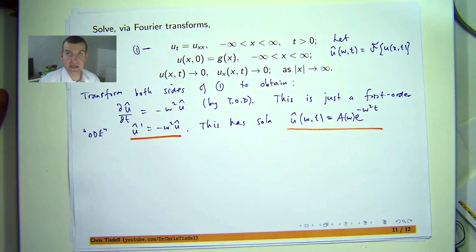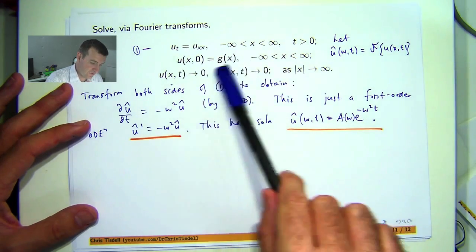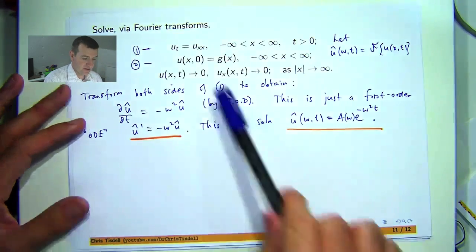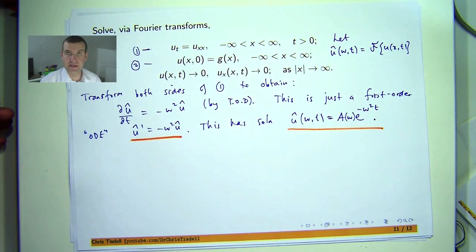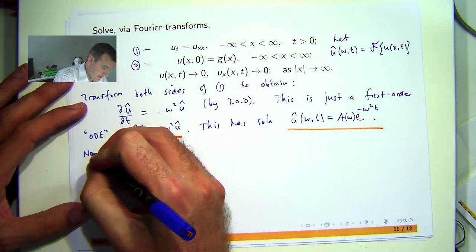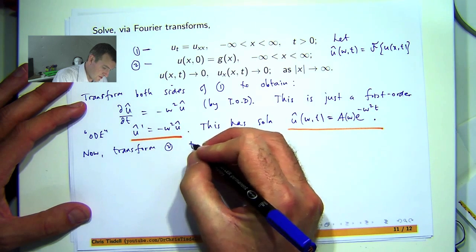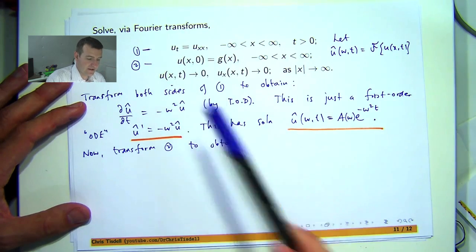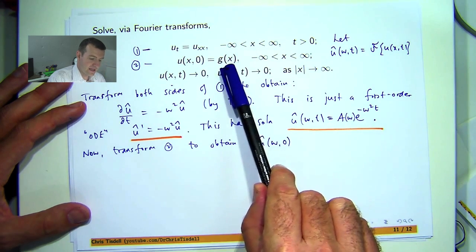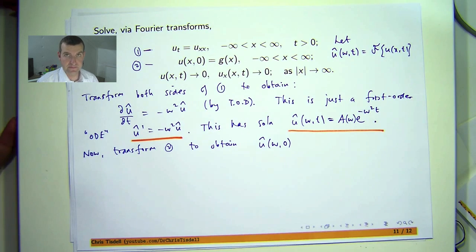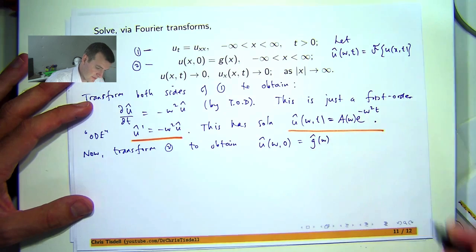We're going to use the initial temperature. So if we transform equation 2, both sides of 2, we'll actually get an initial condition that is compatible with this kind of transformed general solution. So let's transform 2. So if I transform the left-hand side, this is just going to be u-hat of w, zero. The transform of the right-hand side, well, we don't know what g is, but let's just assume it has a Fourier transform, let's write the transform as g-hat.